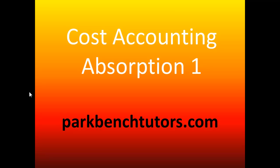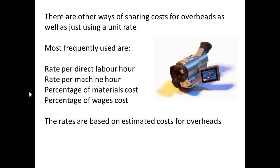In this podcast, we are going to take a first look at absorption as part of cost accounting. There are other ways of sharing costs besides just using a unit rate. Frequent alternatives include rate per direct labour hour, per machine hour, or as a percentage of materials, percentage of wages, or a percentage of total costs.